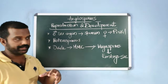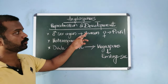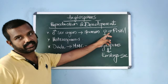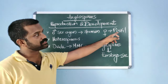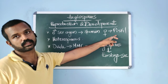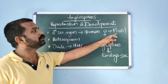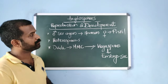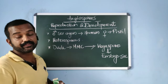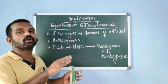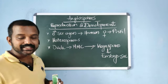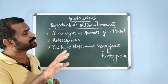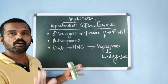Regarding reproduction in angiosperms, the male sex organ is known as the stamen and the female sex organ is known as the pistil. In older versions of NCERT the female sex organ was given as pistil or carpel, but in the recent 2021 edition it is corrected to pistil only.